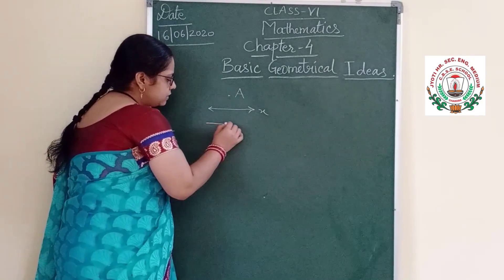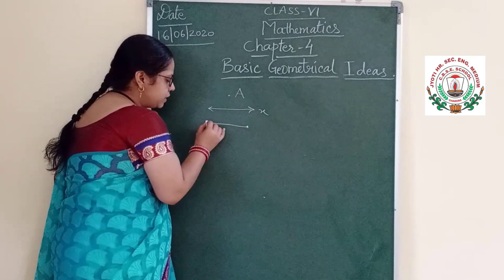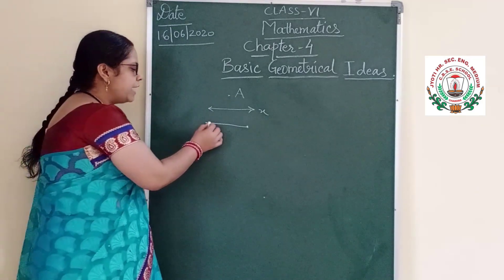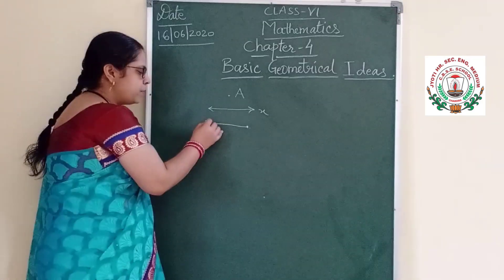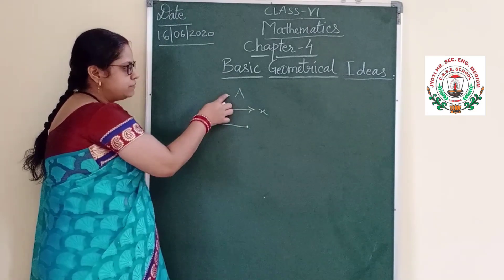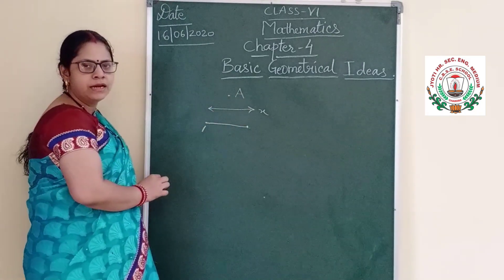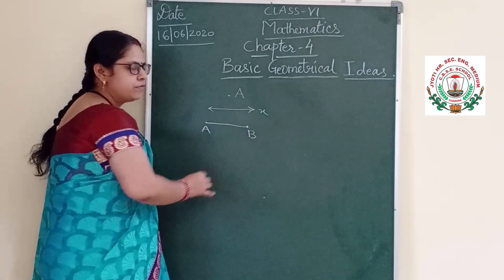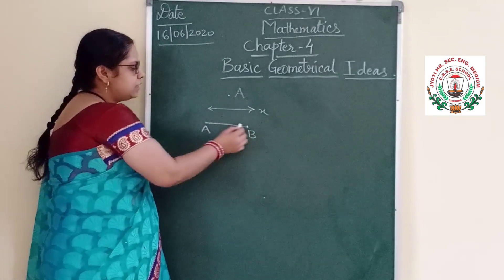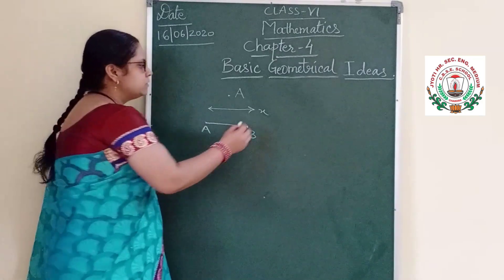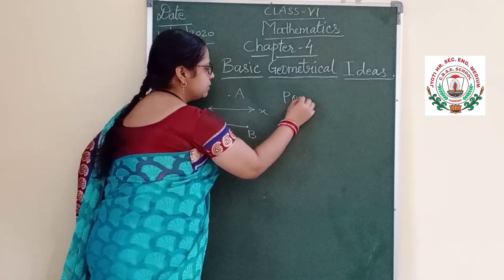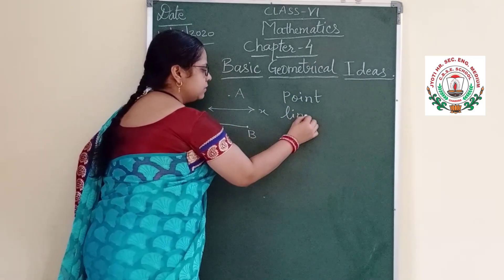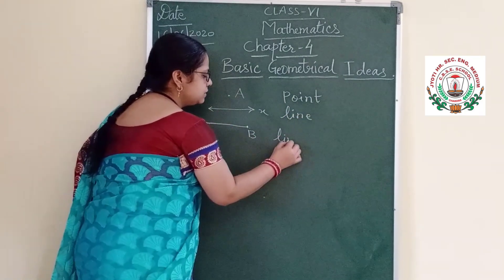Third is a line segment. A line segment means both sides it will have two end points. Here we are seeing that a point is denoted by a capital letter — so here capital alphabet A and here capital alphabet B. So it is a line segment.